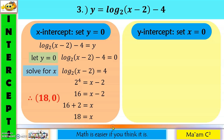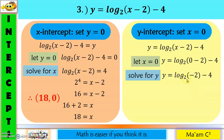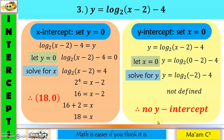For the y-intercept of the third example, set x equal to zero. Zero minus 2 is negative 2. The argument must be greater than zero, but this is a negative number, so the logarithm is not defined. Therefore, we do not have a y-intercept, meaning the graph will not cross the y-axis.